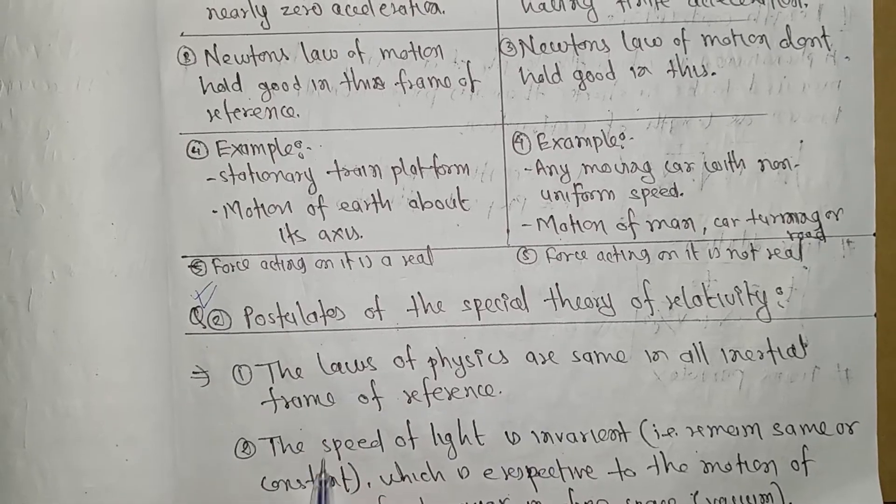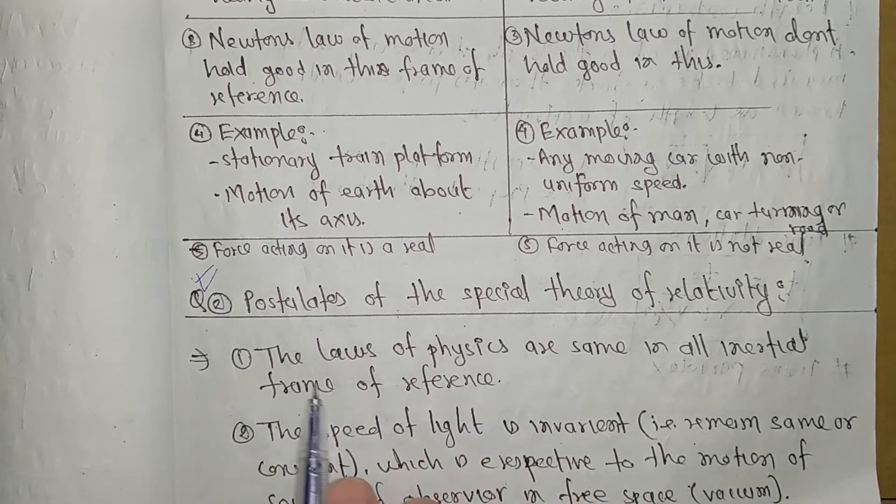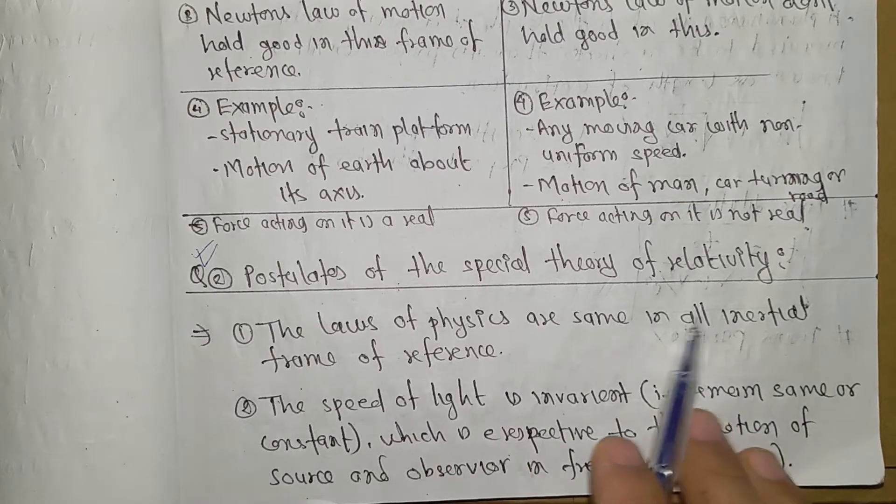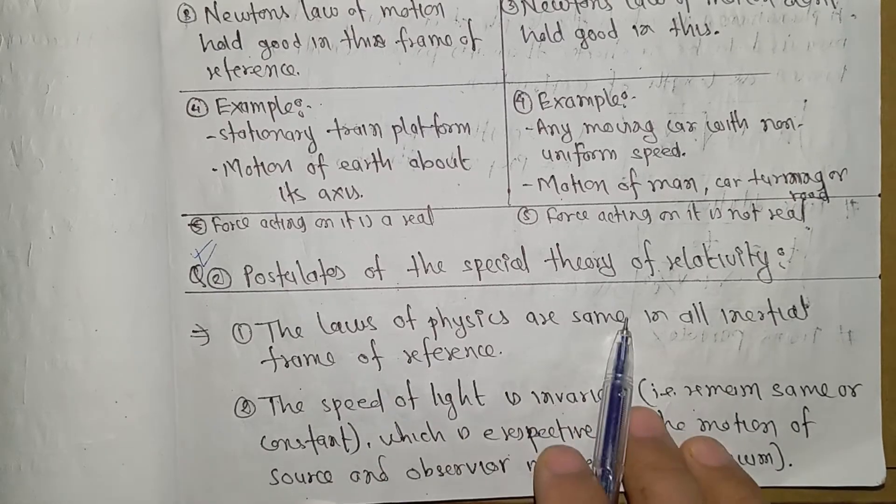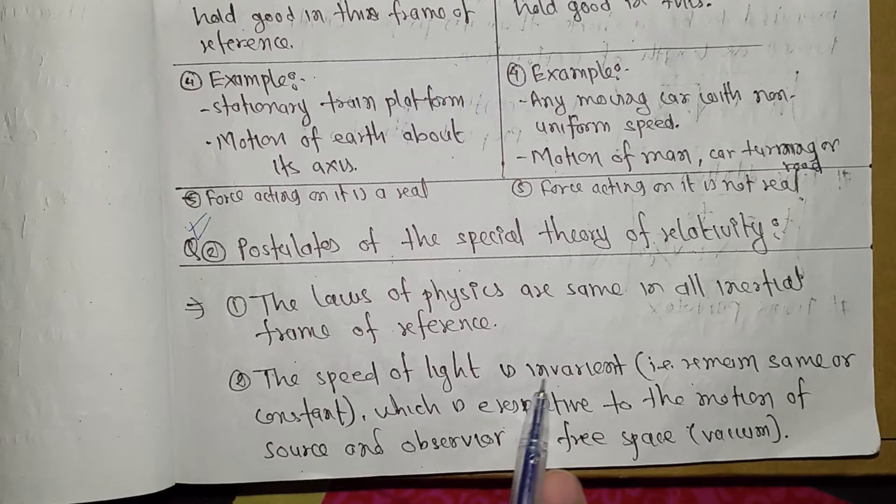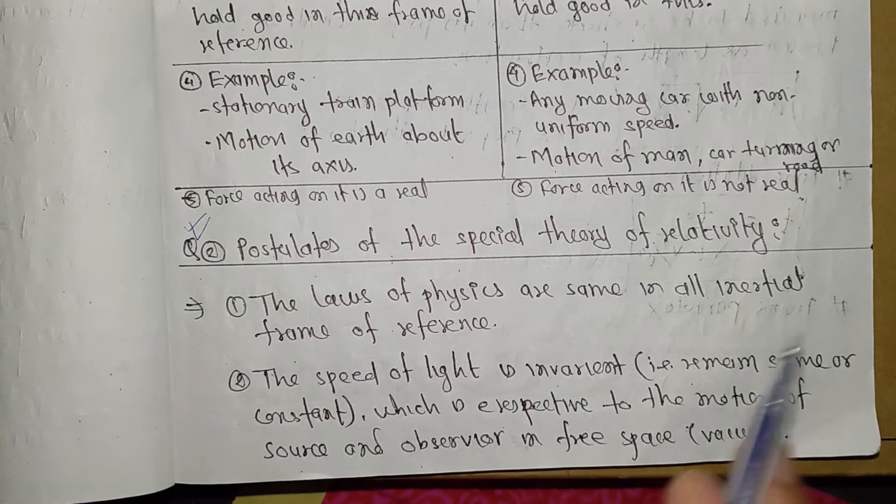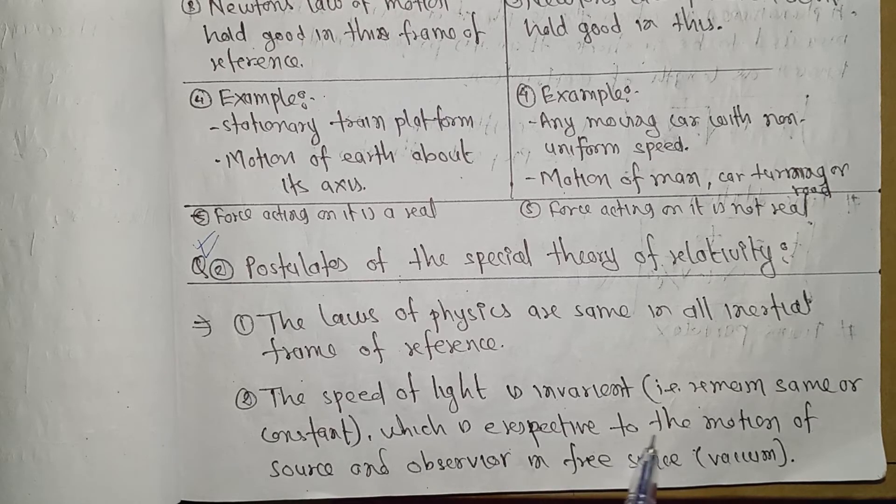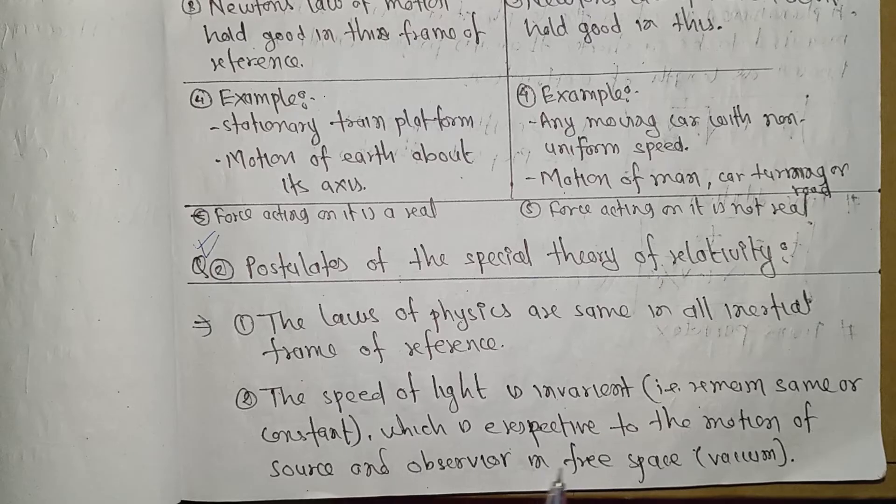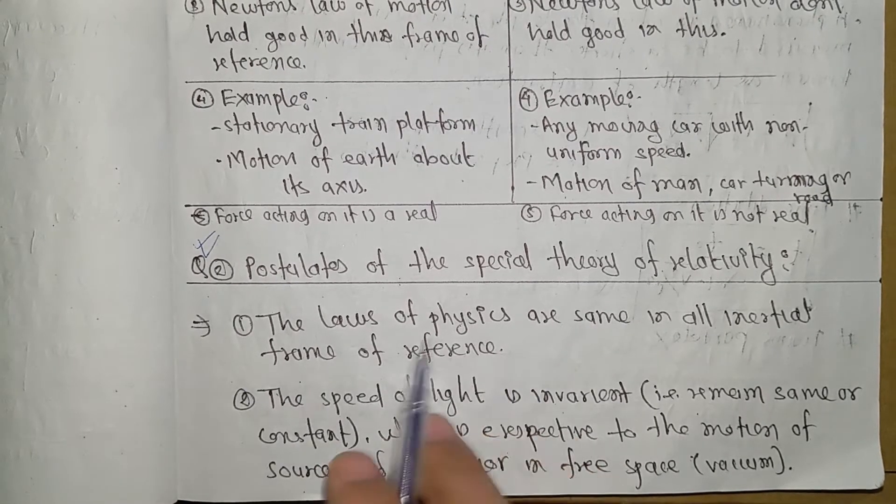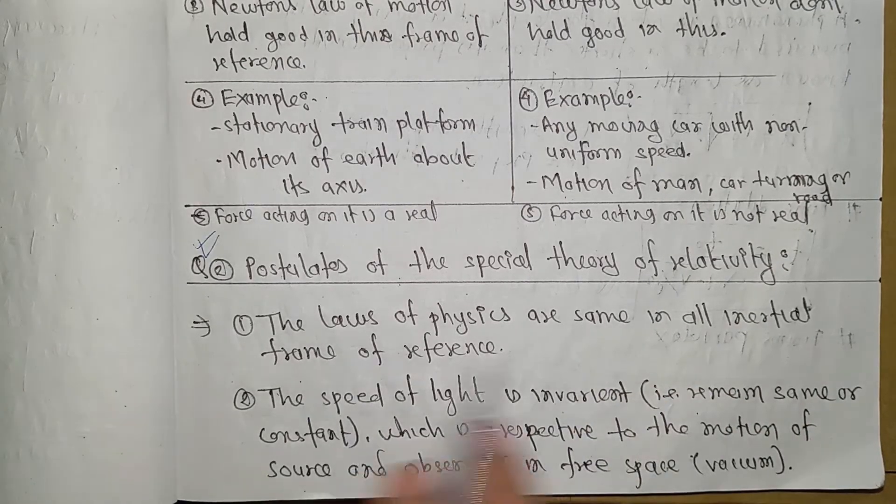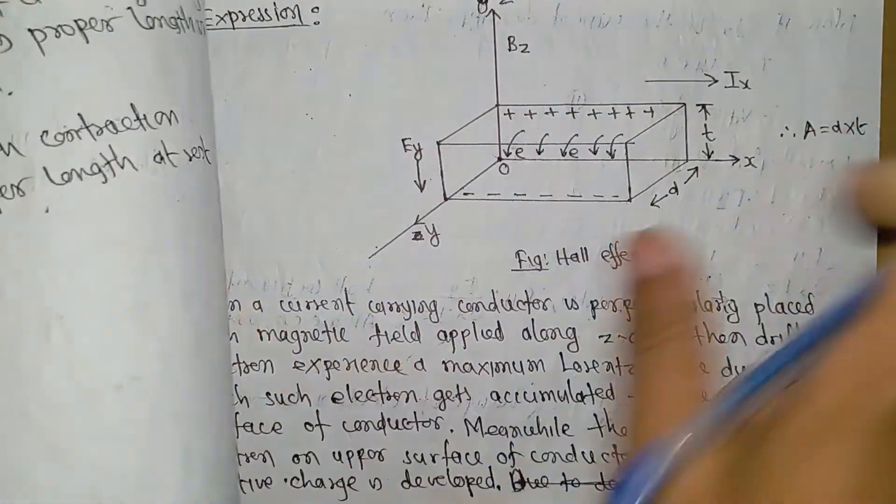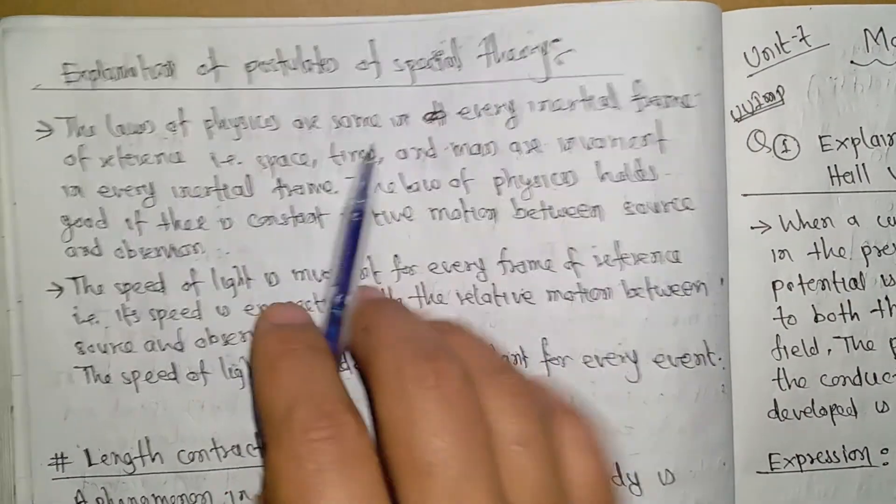Now for the postulates of special theory of relativity. First postulate: the laws of physics are same in all inertial frames of reference. Second postulate: the speed of light is invariant, that is it remains same or constant irrespective of the motion of source and observer in free space or vacuum.